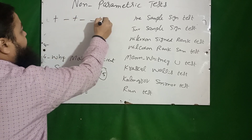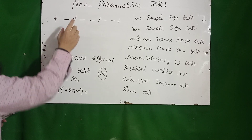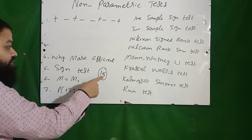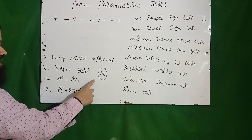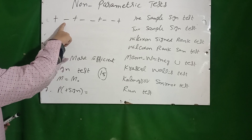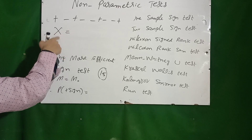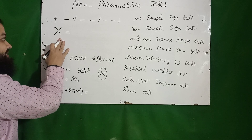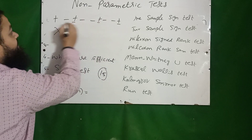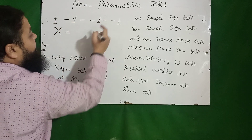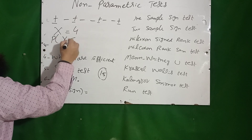In the sign test, we allocate signs to values according to the median. If a value equals the median, it is discarded. For example, 18 − 15 = +3, so plus is assigned; 14 − 15 = −1, so minus is assigned. The test statistic is X, a very important concept: X represents the less frequent signs. For example, if plus appears 4 times and minus appears 5 times, then X equals 4.